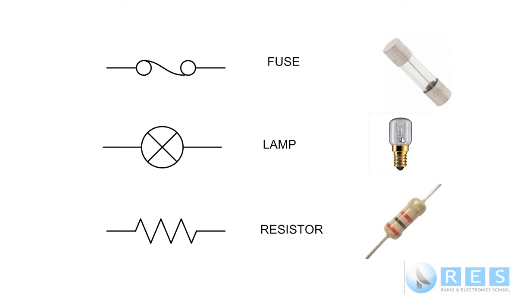A fuse is for protection. Next is a lamp — in this case an old incandescent lamp, but it could just as easily be a small indicator lamp on the front of a radio. It doesn't have to be a light; it could be an on-off indicator, colored red or green or whatever. That's the symbol for a lamp.